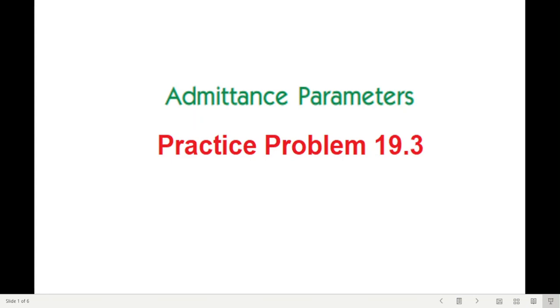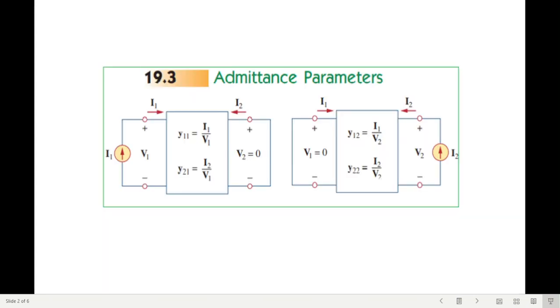This is on the request of a student. Let's recall we have two types of connections. In the first connection, we find y11 and y21. For that, we connect the current source on the left-hand side and short circuit the right-hand side. For the other two parameters, y12 and y22, we connect the current source to the right-hand side and short circuit the left-hand side.